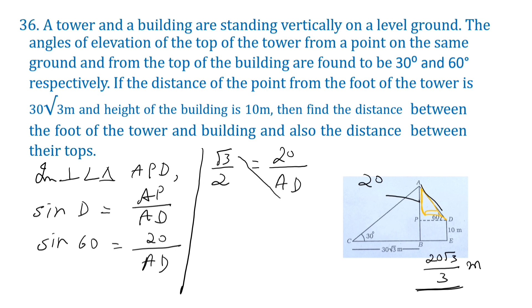Now cross multiply. Bring AD here, root 3 here in this direction. 2 goes here. 20 into 2 by root 3. So AD is equal to 40 by root 3. That is equal to 40 root 3 by 3 meters.